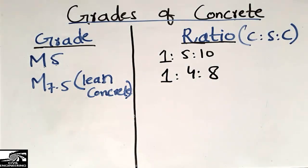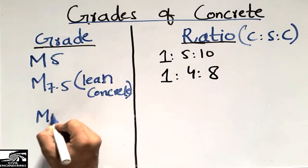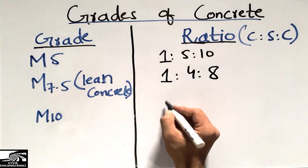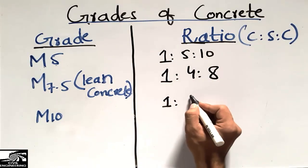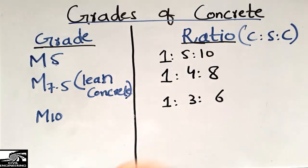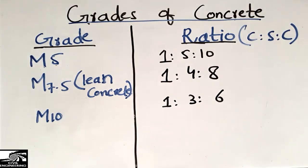The third one is M10. The ratio of materials is 1:3:6, and the strength is 10 megapascals, or 10 Newtons per millimeter squared.